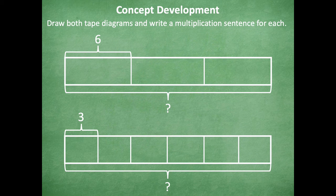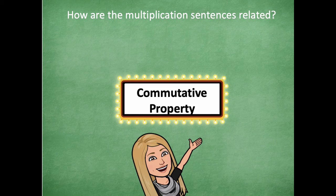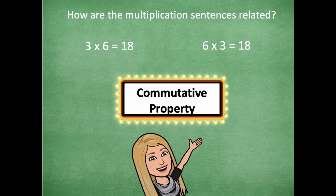Go ahead and pause the video and work on that. The top tape diagram is represented by three times six equals 18, because there are three groups with six in each group. The bottom tape diagram models six times three, because there are six groups with three in each group, which also equals 18. Because of the commutative property — that flip-flop property — you can flip the factors and still get the same product. You already know your threes, so now you can know your sixes too!